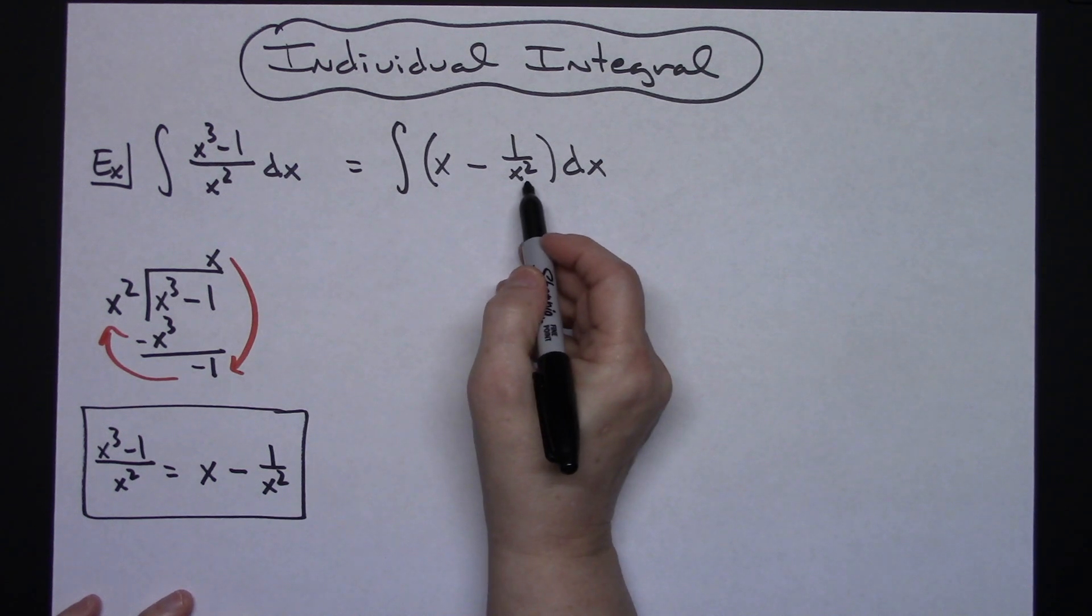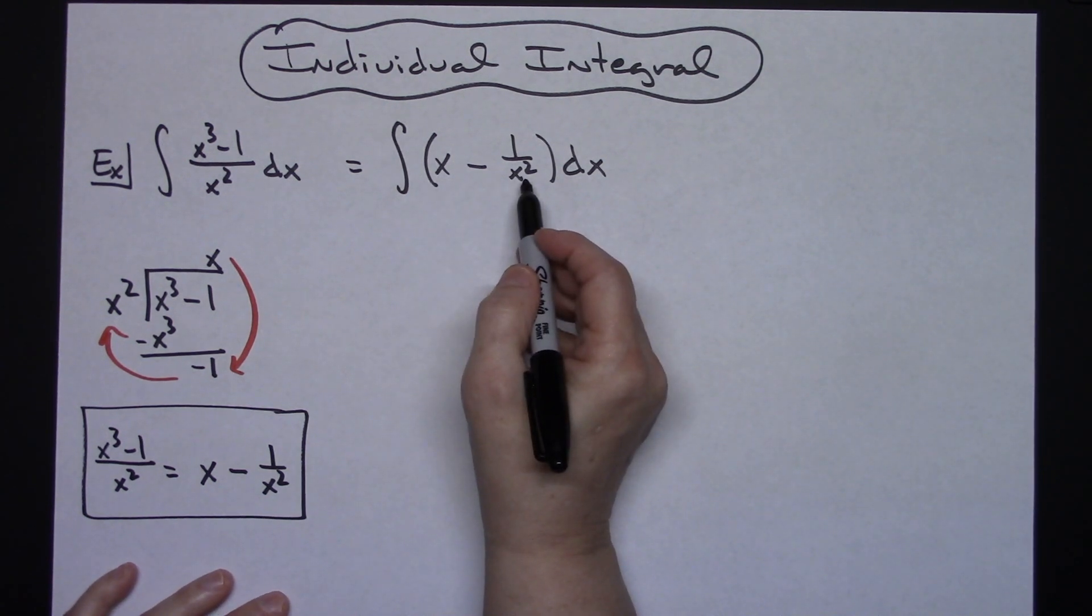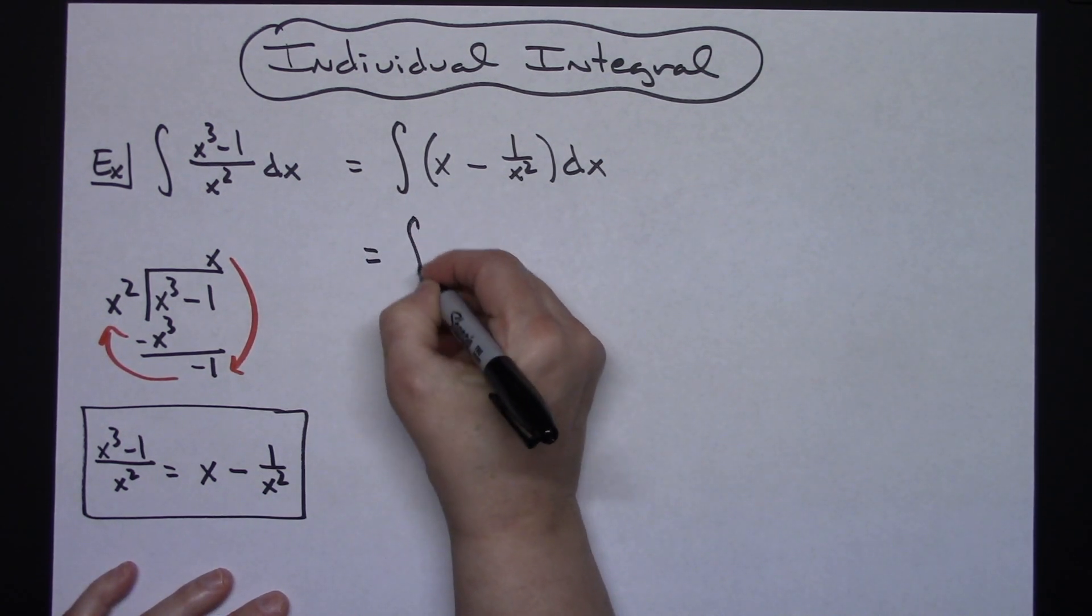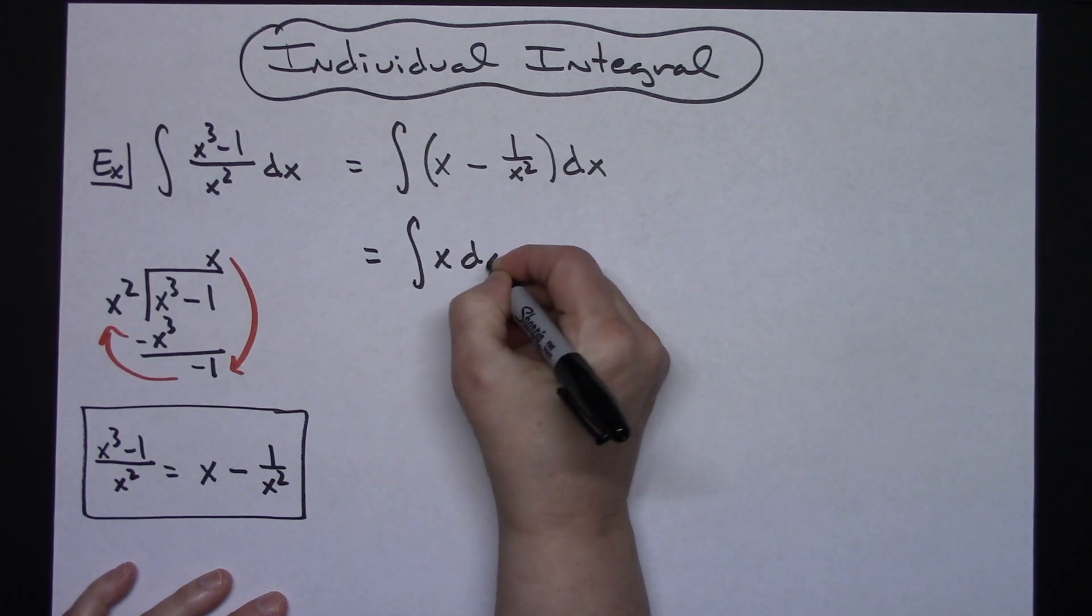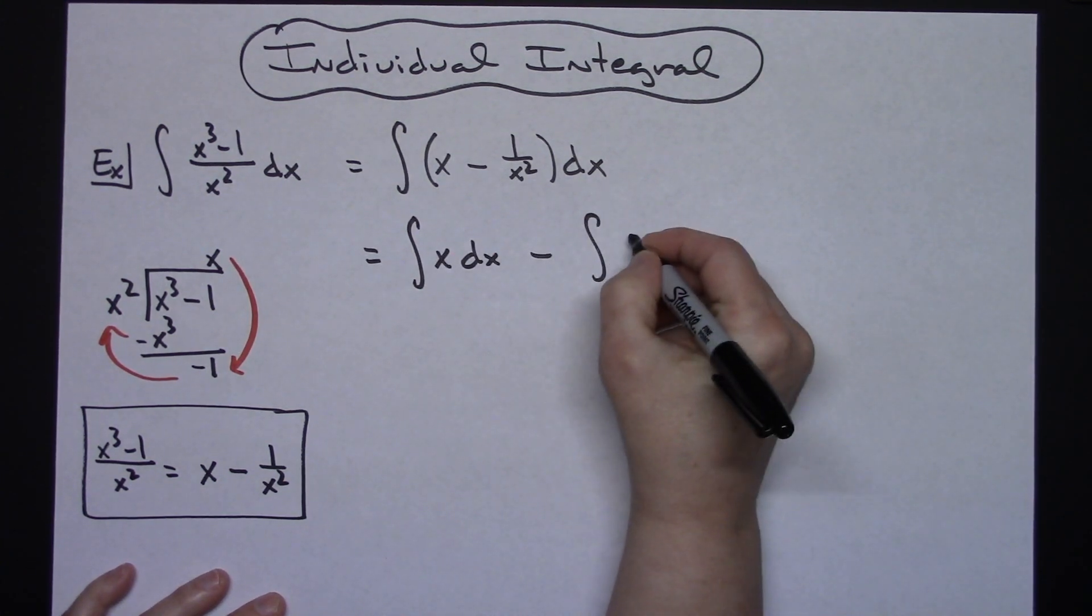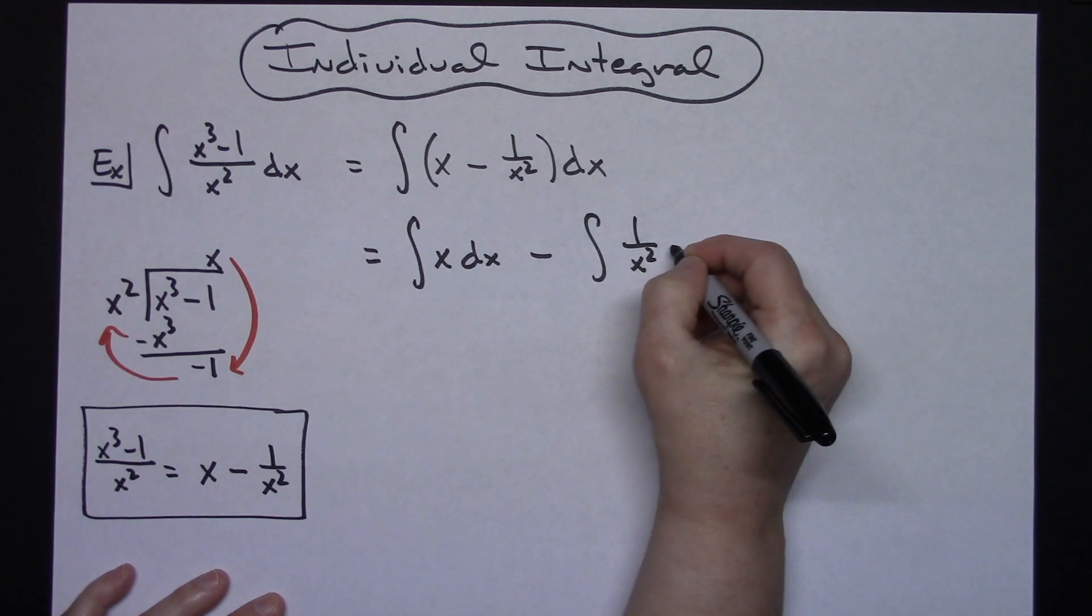This is going to be a nice little polynomial. I can break it into two separate integrals: the integral of x dx minus the integral of 1 over x squared dx.